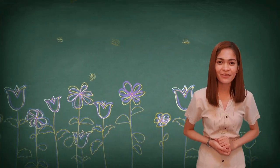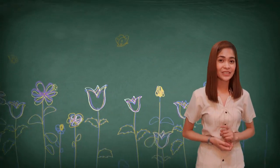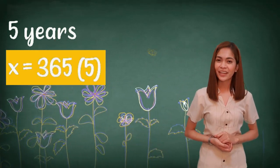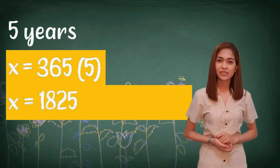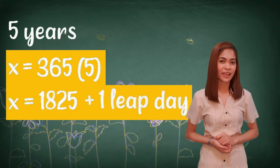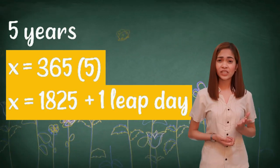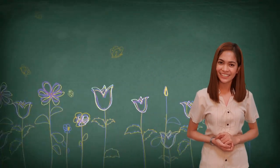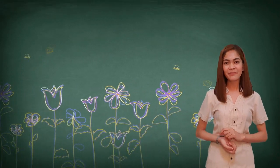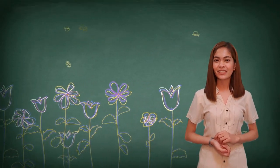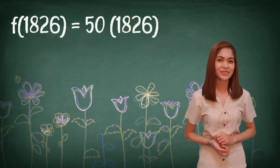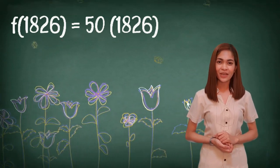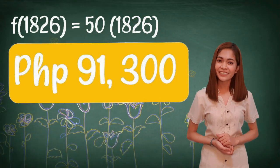You plan to continue saving for another 4 years, which means you will be saving for 5 years. The number of days in 5 years is 365 × 5 = 1,825, plus 1 leap day which happens every 4 years, so the value of x will be 1,826. So f(1826) = 50 × 1826, which equals 91,300 pesos.